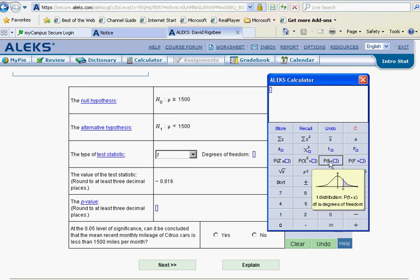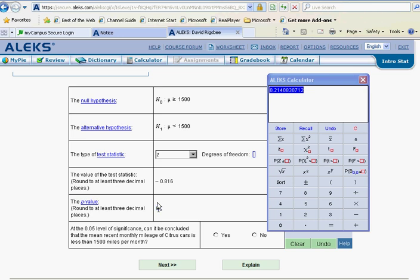So going back to our old notes here on the use of the p of t button, we're going to have to take 1 minus the p of t. And we said that that was negative 0.816 for our test statistic. And of course, we had a sample size of 15, and so our degrees of freedom here are 14. And so calculating that gives us a p-value of 0.214.